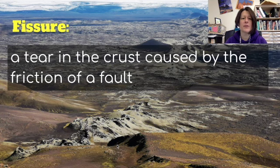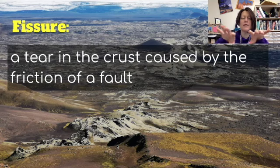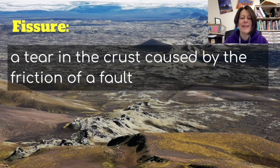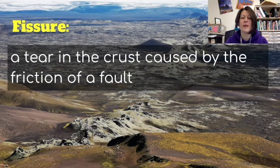Sometimes with earthquakes you also get what's called a fissure. This is a tear in the crust caused by the friction of a fault, and they will go in often different directions. They're like wrinkles. Actually, in the Bible there is an account of a fissure in Deuteronomy when some people who rebelled against the Lord, and he opened up the earth and it swallowed them. So that is an example of a fissure in the Bible.